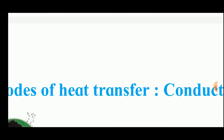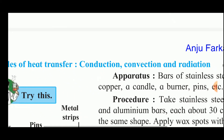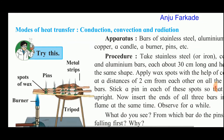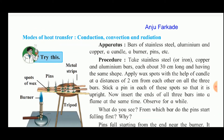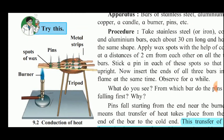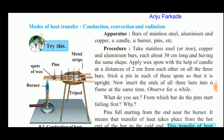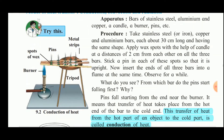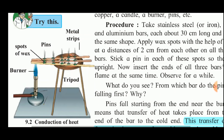The three modes of transfer of heat are conduction, convection, and radiation. In the conduction experiment, the apparatus consists of bars of stainless steel, aluminium, and copper, along with a candle, a burner, and pins. Take bars each about 30 centimeters long of the same shape and apply wax spots with a candle at a distance of two centimeters from each other on all three bars.